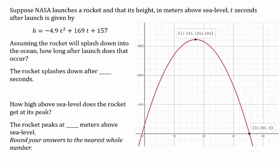I've graphed this function and located some important points of the parabola. Looking on the graph for when the height is zero, which is when the graph crosses the horizontal axis, that occurs about 35 seconds after launch.